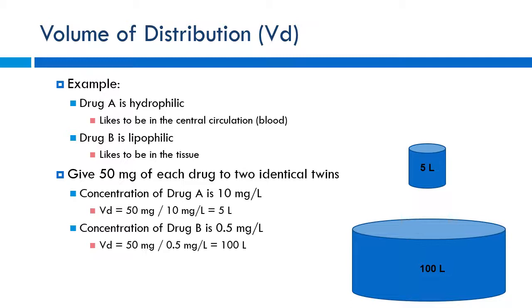What happens if the patient's volume of distribution changes? Imagine a patient with renal failure who develops sepsis — the kidneys aren't working, so fluid builds up in the extracellular and interstitial spaces. Since aminoglycosides are hydrophilic, they follow that water and distribute into this extra fluid. VD increases, so blood levels go down — you may need a higher dose to achieve therapeutic concentrations. Conversely, a dehydrated patient has lower body water and a shrunken VD, concentrating the drug in the bloodstream — requiring a lower dose to avoid toxicity.